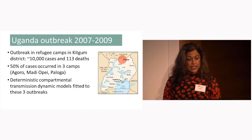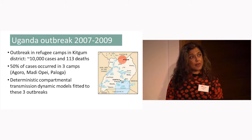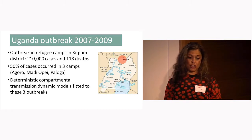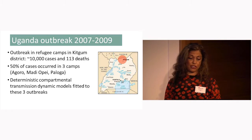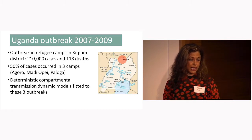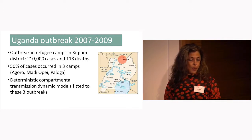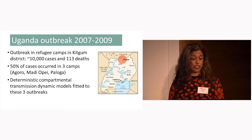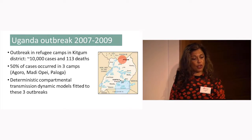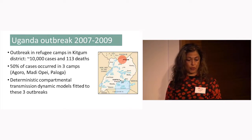MSF responded to a large outbreak in Uganda between 2007 and 2009, in refugee camps in the Kitgum district, which resulted in about 10,000 cases and 113 deaths. About 50% of those cases were in just three camps: Agora, Madiope, where the outbreak started, and Paloga.